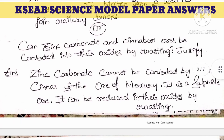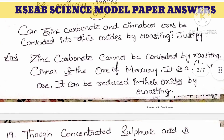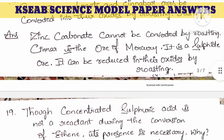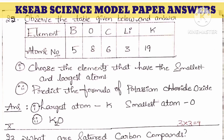Next optional question: can zinc carbonate and cinnabar ores be converted into their oxides by roasting? Zinc carbonate cannot be converted by roasting because it has a carbonate ore. Whereas cinnabar is the ore of mercury — it is a sulphide ore and it can be reduced to its respective oxide by the roasting process.